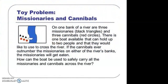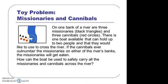In missionaries and cannibals, first of all we have the definition of the problem. There is a river flowing and there are missionaries and cannibals on the left side of the bank, where the missionaries are represented by black triangles and the cannibals by circles. Missionaries are God-fearing people and cannibals are people who eat human flesh. If the number of cannibals outnumbers the missionaries, the cannibals can eat the missionaries. We have to make them cross this river, and the boat can carry only two people at a time.